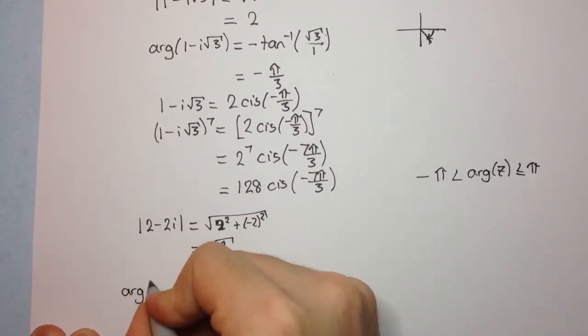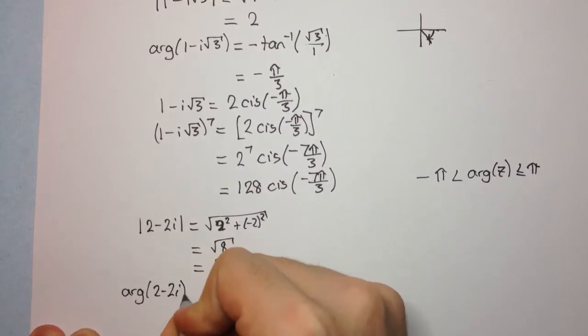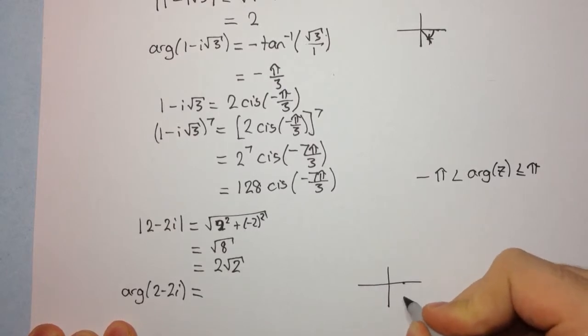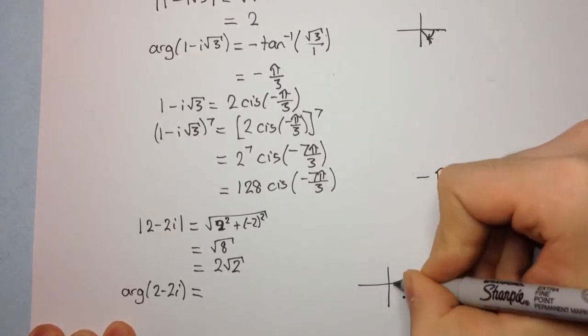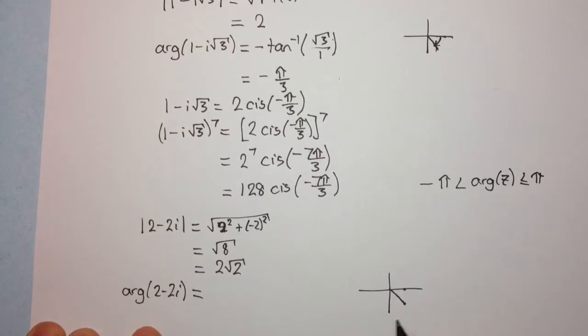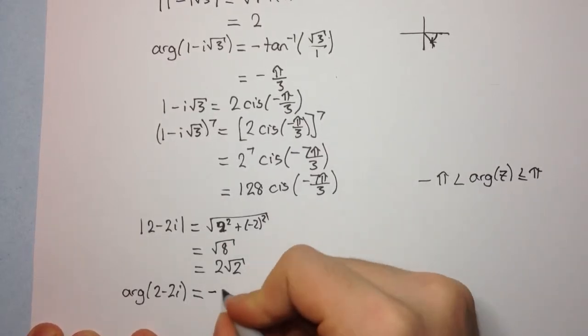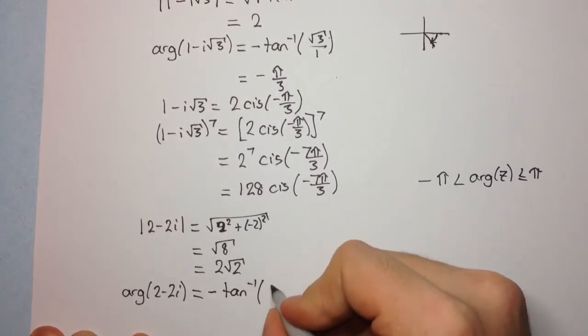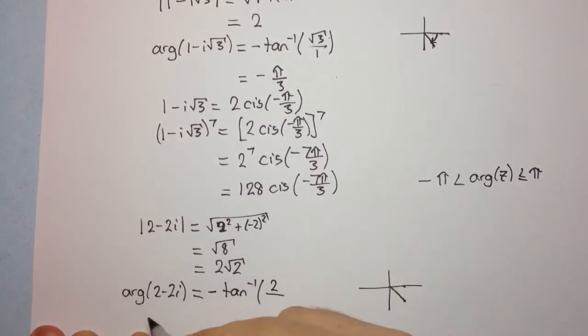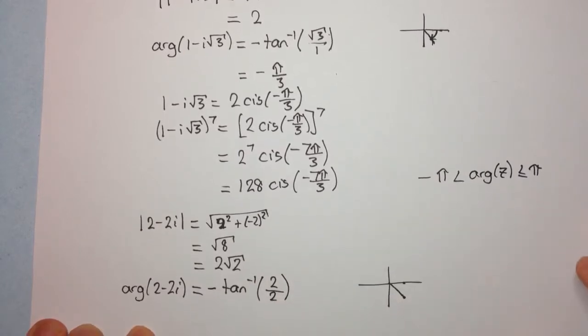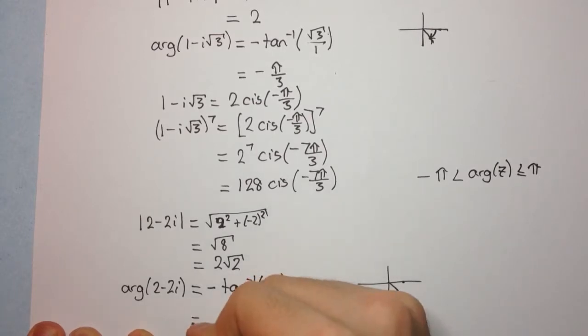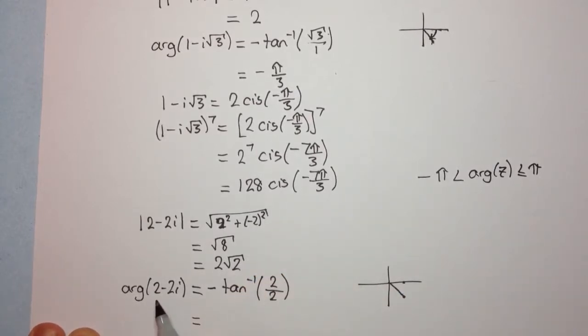How about the arg of 2 - 2i? Well, once again, we're going to be across 2 and down 2, so we're going to be in the fourth quadrant. So the same thing applies. We have minus tan inverse of the absolute value of the imaginary part, which is 2, over the absolute value of the real part, which is 2. So 2 over 2 is 1, and tan inverse of 1 is π/4, and so the argument of 2 - 2i is -π/4.